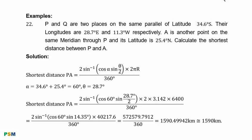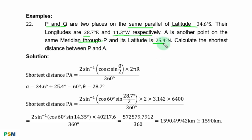Example 22: P and Q are two places on the same parallel of latitude 34.6 degrees south. Their longitudes are 28.7 degrees east and 11.3 degrees west respectively. A is another point on the same meridian through P and its latitude is 25.4 degrees north.